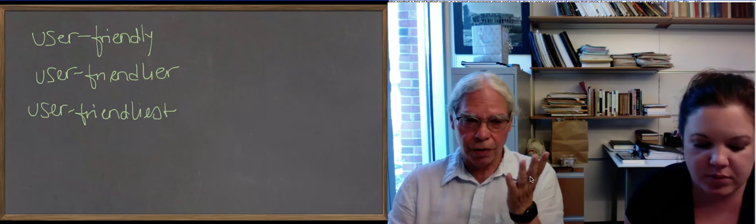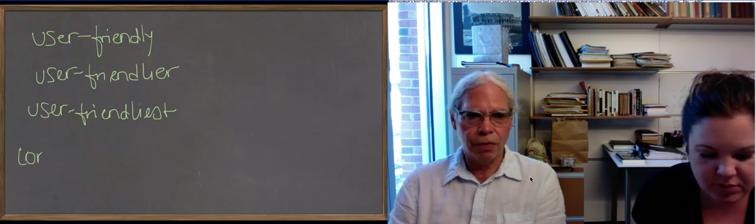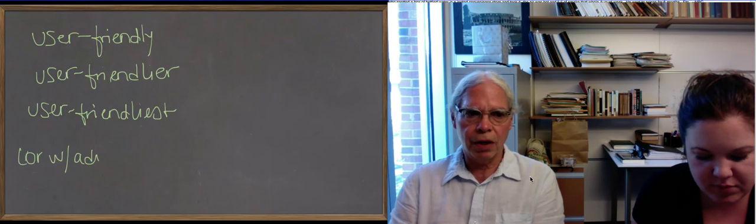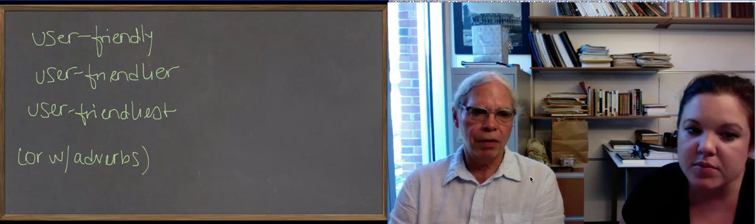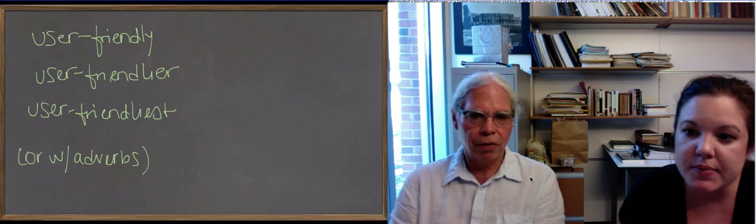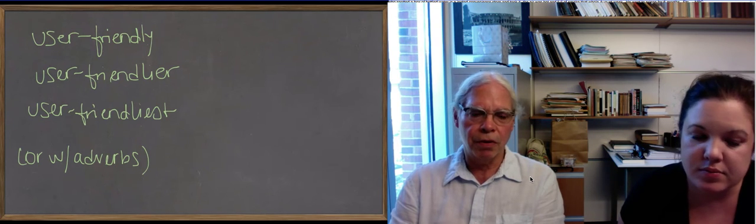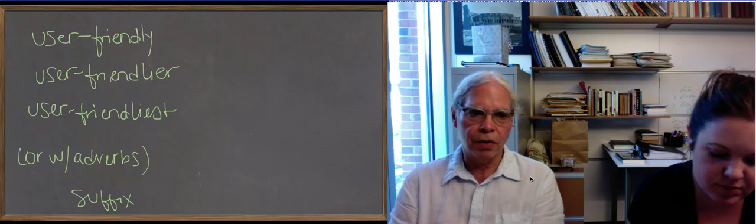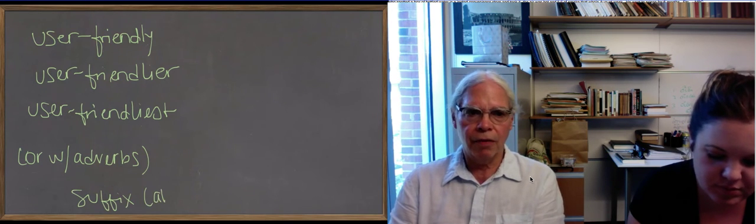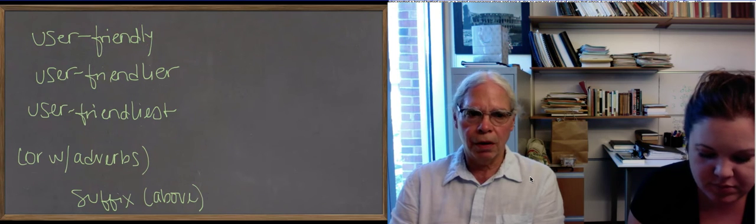Those three forms are what you have in Greek as well. So, you have adverbial ways of doing comparison, and suffix forms of doing comparison, and the suffix forms like friendlier and friendliest, but we also have some that are irregular.